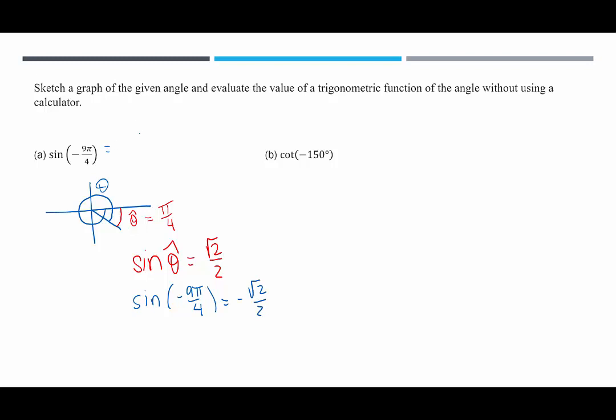So we have our sketch and we've evaluated for sine. How about our second example? We're looking for cotangent of negative 150 degrees.